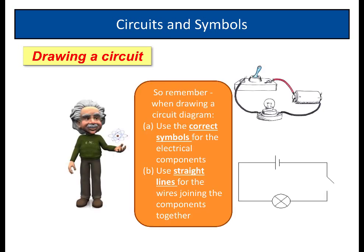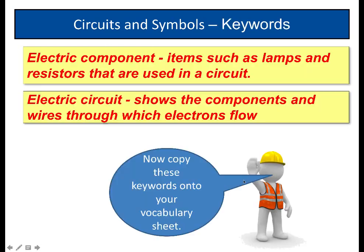So, just remember, when drawing a circuit diagram, use the correct symbols for electrical components. A component is anything in the circuit. A component could be ammeter, lamp, cell, whatever. So, use the correct symbols for electrical components. And then use straight lines for the wires to join the components together.